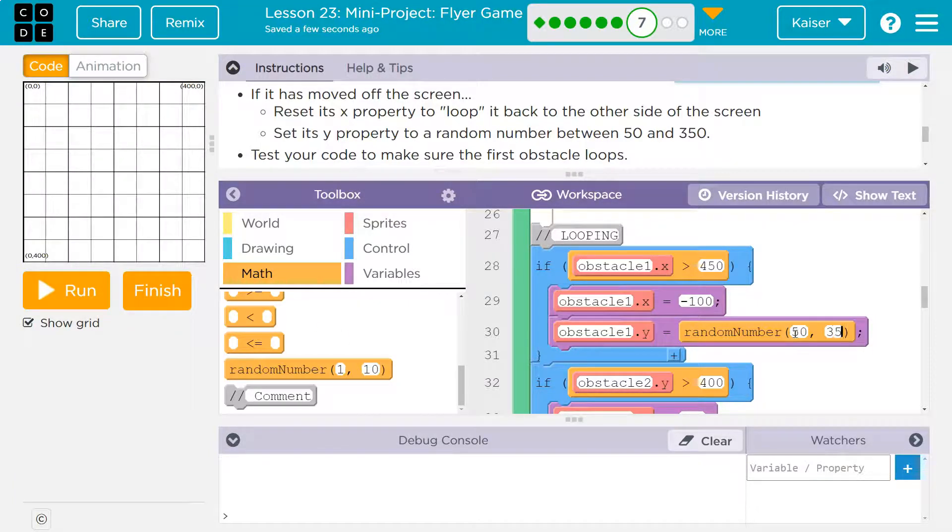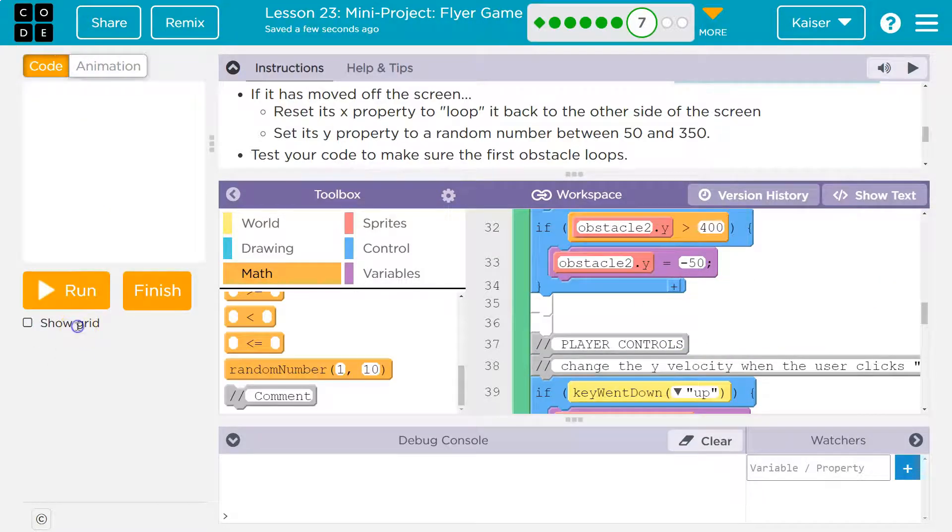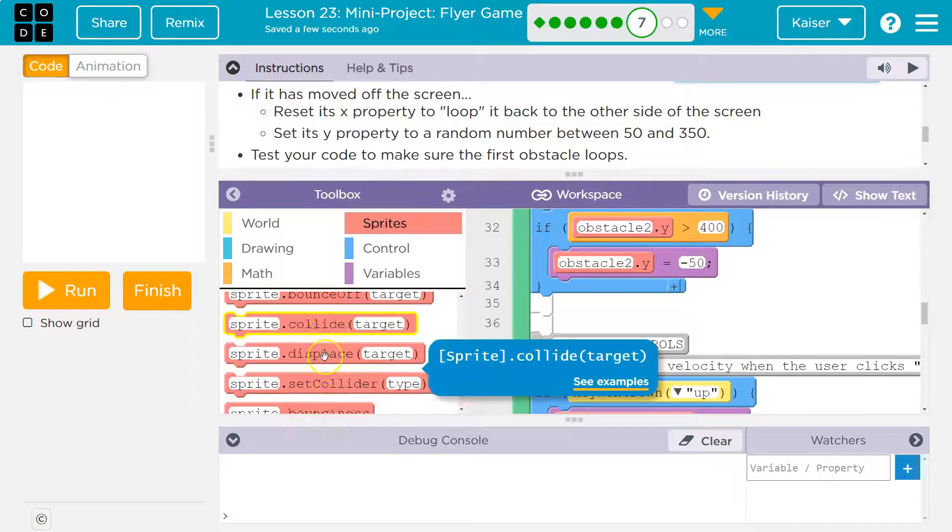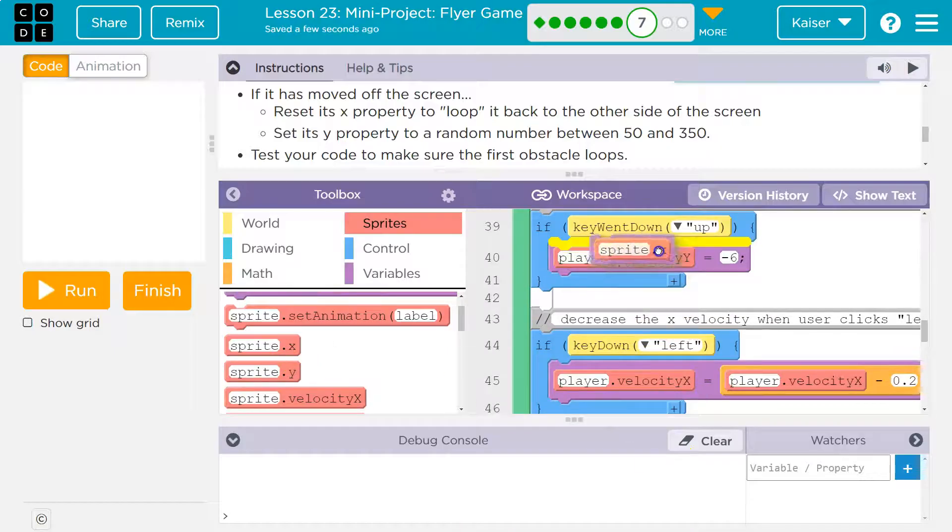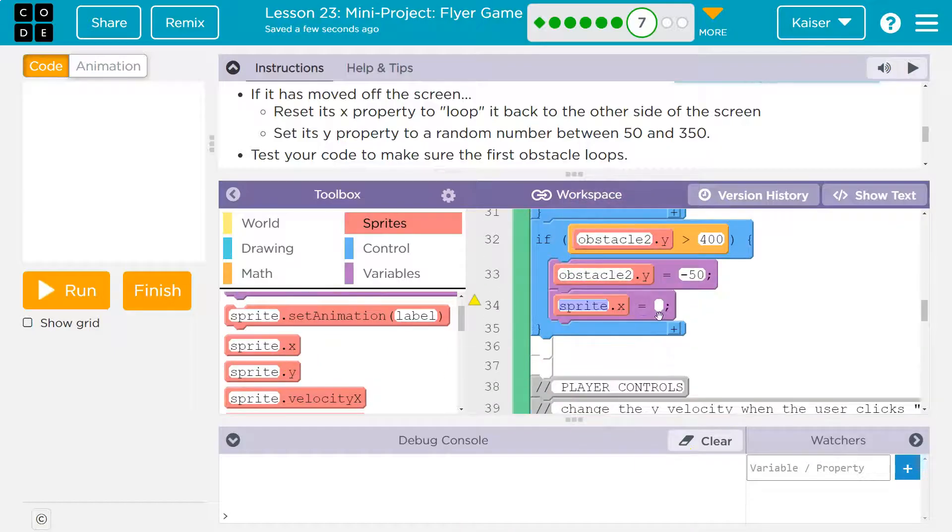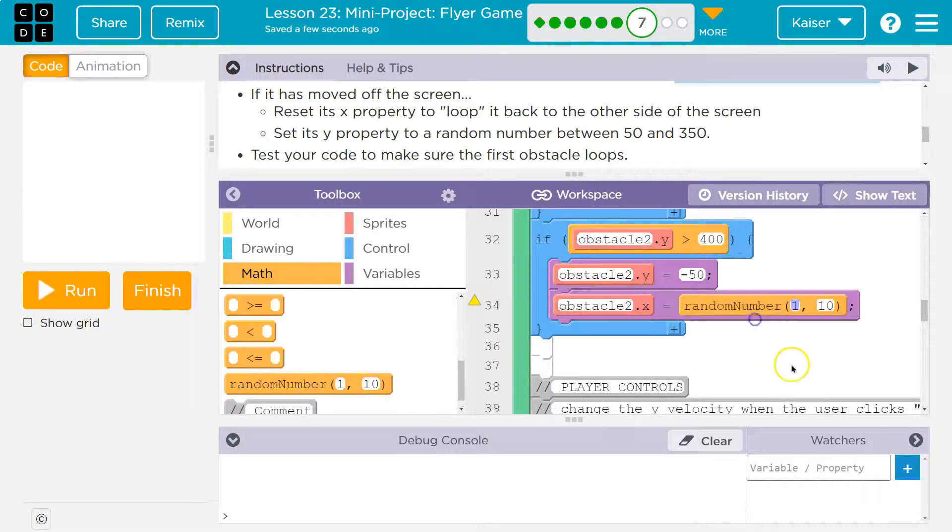Now all we have to do is do this for the x value down here, because we're going to leave y the same. We want it to start off the screen, but we randomize where it is for an x. Going over to sprites, going to grab x, obstacle 2 dot x, and then we need to do the same thing—math and a random, and then we're going to do 50 to 350.